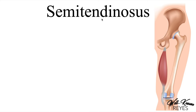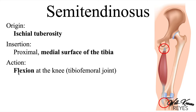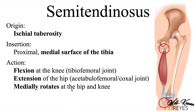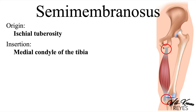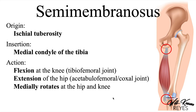Next we have semitendinosus. Its origin is the ischial tuberosity, and it inserts proximally on the medial surface of the tibia. Its actions are flexion at the knee at the tibiofemoral joint, extension of the hip at the acetabulofemoral or coxal joint, and it medially rotates at the hip and knee when flexed. Semimembranosus: its origin is the ischial tuberosity, its insertion is the medial condyle of the tibia, and its actions are to flex at the knee, extend the hip, and medially rotate at the hip and knee when flexed.